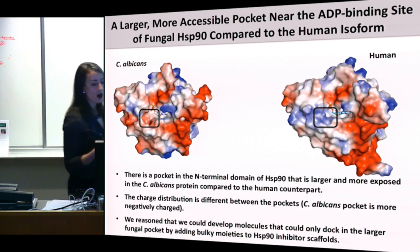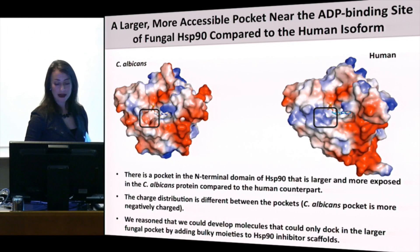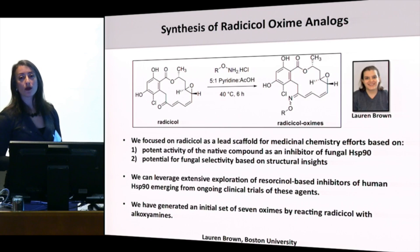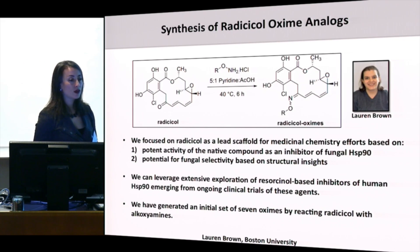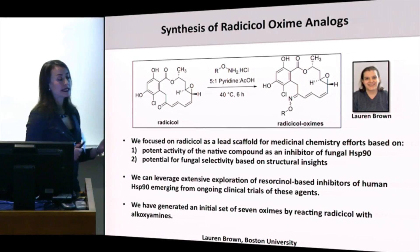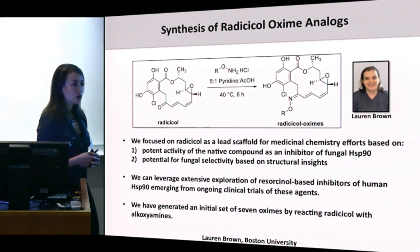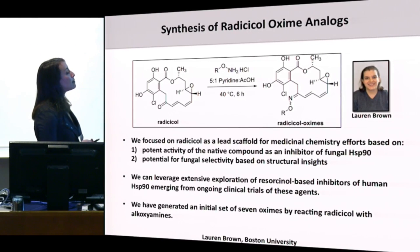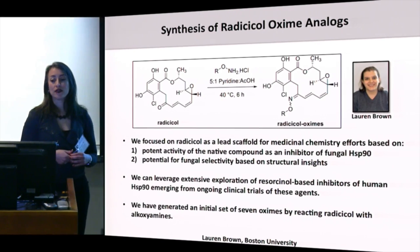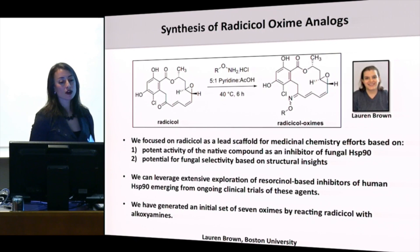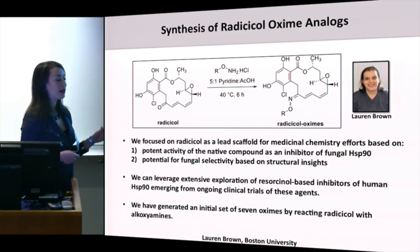We reasoned that adding bulkier moieties to existing Hsp90 inhibitor scaffolds could develop molecules that only dock in the larger fungal protein. We collaborated with chemist Lauren Brown from John Porco's group at Boston University. We focused on radicicol as our lead scaffold because it has the most potent antifungal activity out of existing scaffolds and, based on our structural insights, has the greatest potential for fungal selectivity. We can also leverage extensive exploration of these inhibitors from ongoing clinical trials.